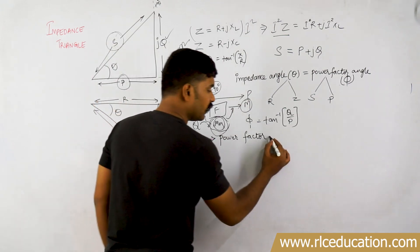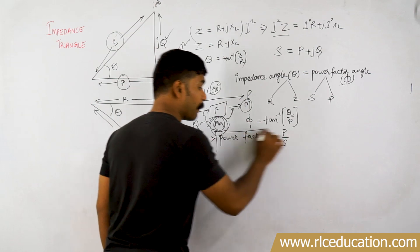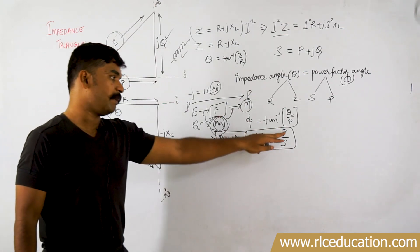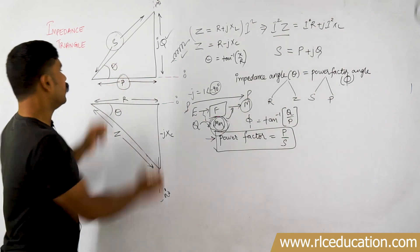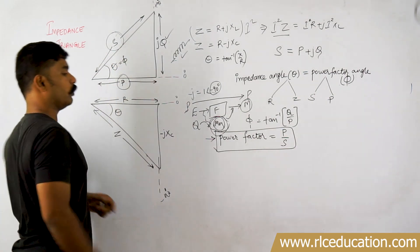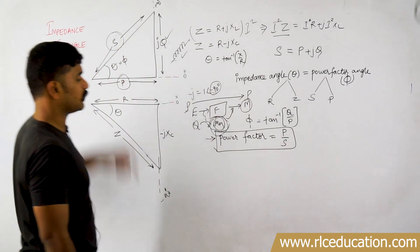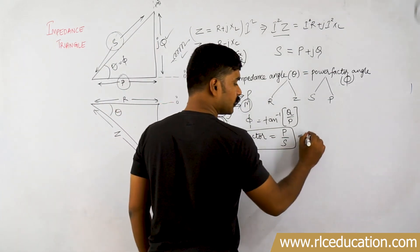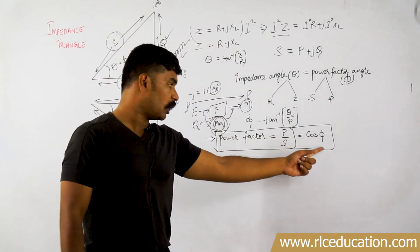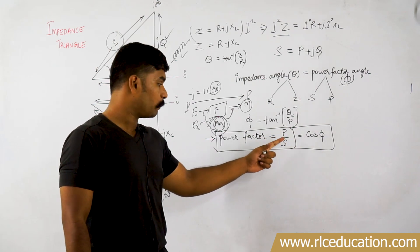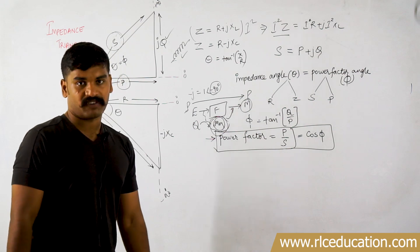That is the reason we have come up with the power factor. Power factor defines how much active power is present out of total apparent power. Power factor is given by P divided by S. Since this is a right angle triangle, theta equals phi. P by S is adjacent side over hypotenuse, which is cos phi. Therefore, power factor — generally called cos phi — is the ratio of active power to total apparent power.